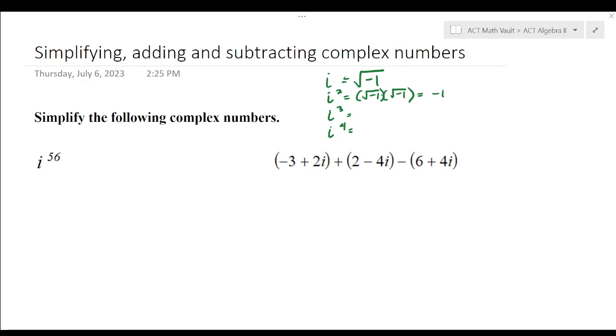Then, i cubed would be the same thing as i squared times i. Remember, i squared is negative one, and then we can just keep i. So, that would simplify to be negative i. I to the fourth would be i squared times i squared, and that would be negative one times negative one to equal just one.